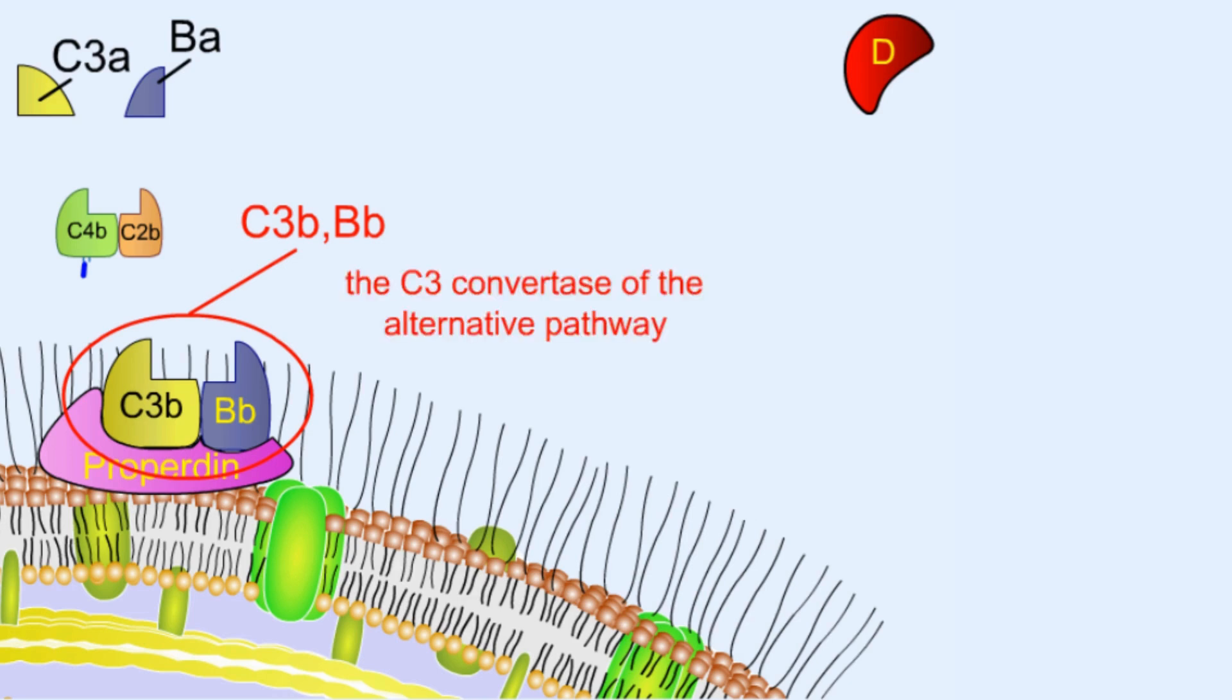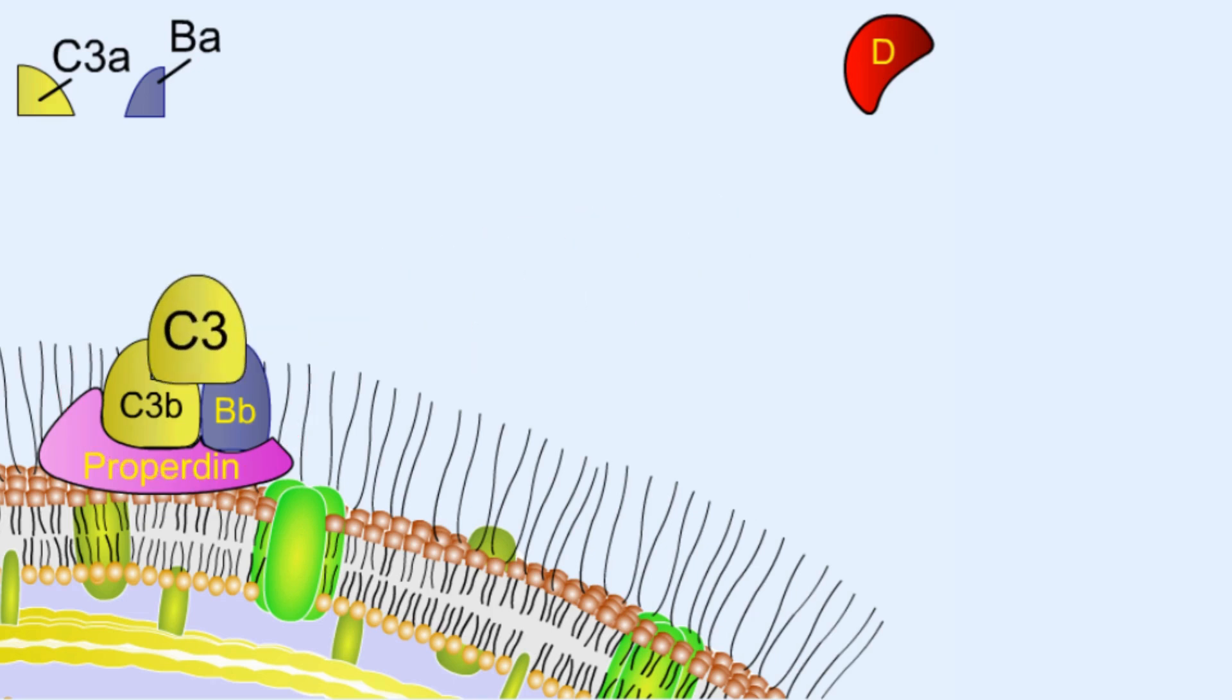it can cleave C3 complement into C3B and C3A. So more C3 molecules can come, cleaved into C3B and C3A which diffuses away. C3B however, in the same fashion, is embedded and attached to the specific surface molecule of the target pathogen. By this fashion, sooner a lot of C3B molecules start to be attached to the membrane surface of the target pathogen.